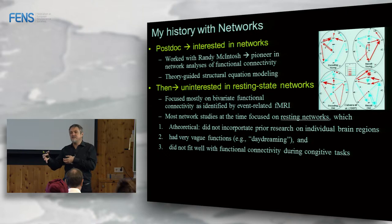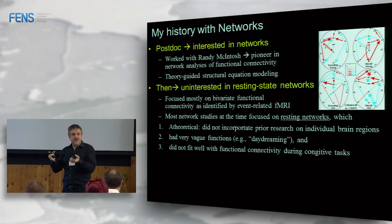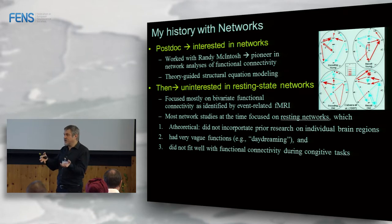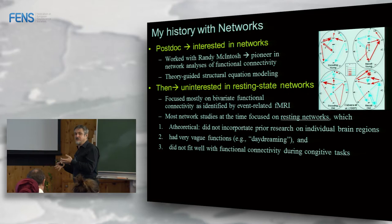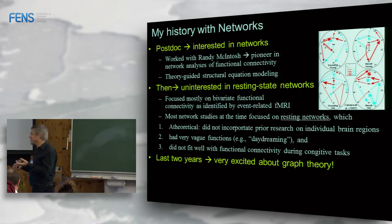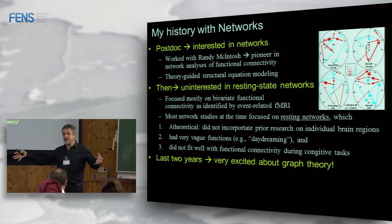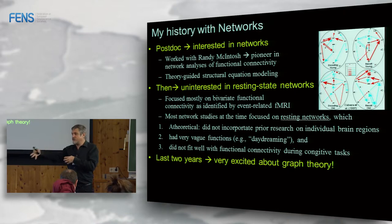Resting-state networks also don't fit well with functional connectivity during cognitive tasks. For example, the connection between left ventrolateral PFC and the hippocampus — very common during learning and one of the strongest subsequent memory effects — is not part of the same resting-state network. The hippocampus typically falls in the default network, while the ventral prefrontal region is not a major component. So resting-state networks didn't seem very useful to me for understanding memory specifically.